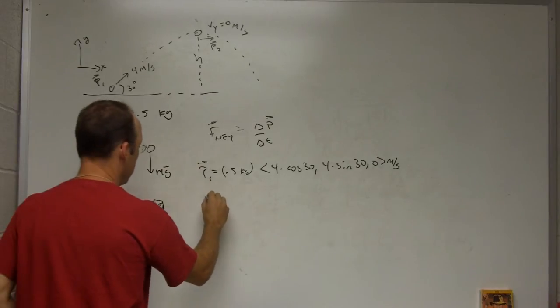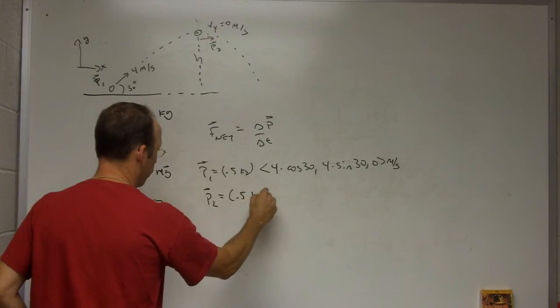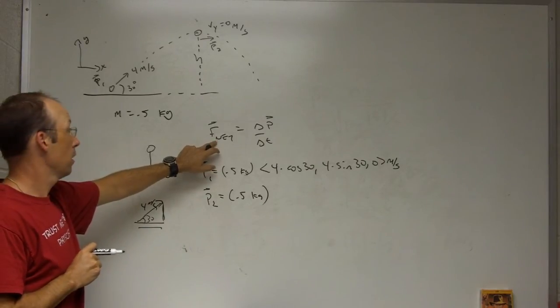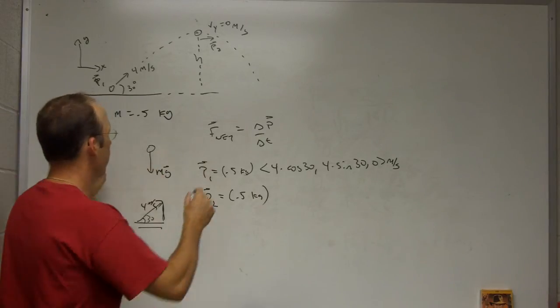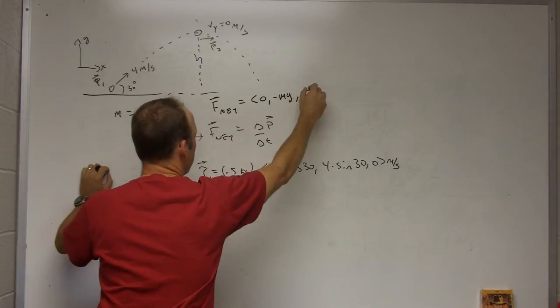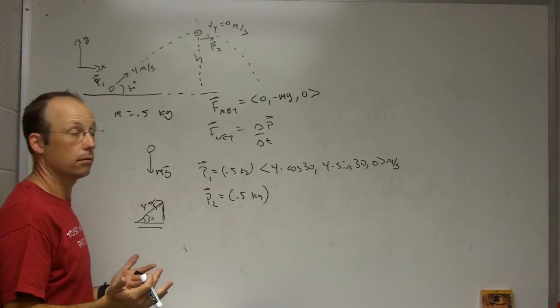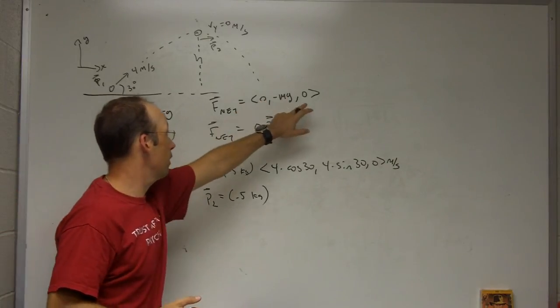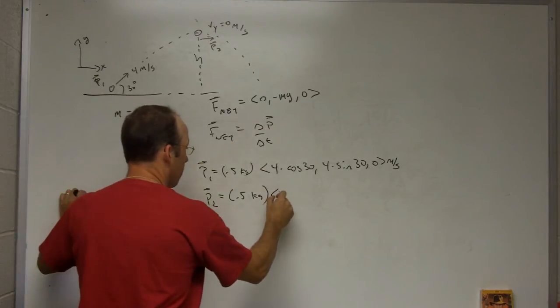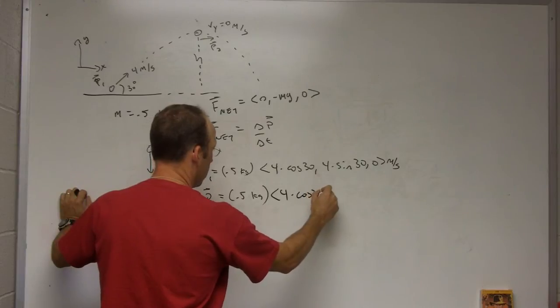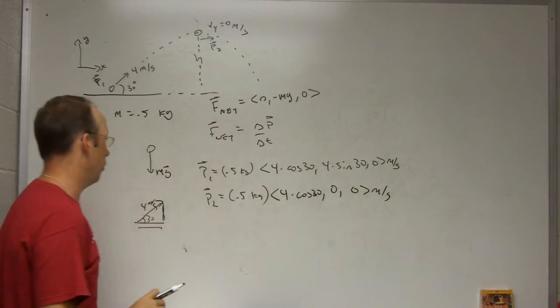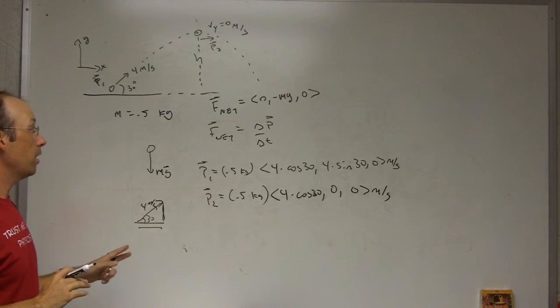Okay, what about the momentum at the top, p2? Well, it's still the same mass, 0.5 kilograms. What about the velocity? Well, I know that the force is only in the y direction. So this is only going to be equal to, let me go ahead and write down that force, F_net, 0, negative mg, 0, or g. And when I write g as a scalar, I'm saying it's 9.8. Okay, so since the x and the z components of forces are 0, the x and z components of the change momentum have to be 0. So that means that the x component doesn't change, 4 times cosine 30. And then I already said I know what the y component was. It was 0. So now I know p1 and p2.